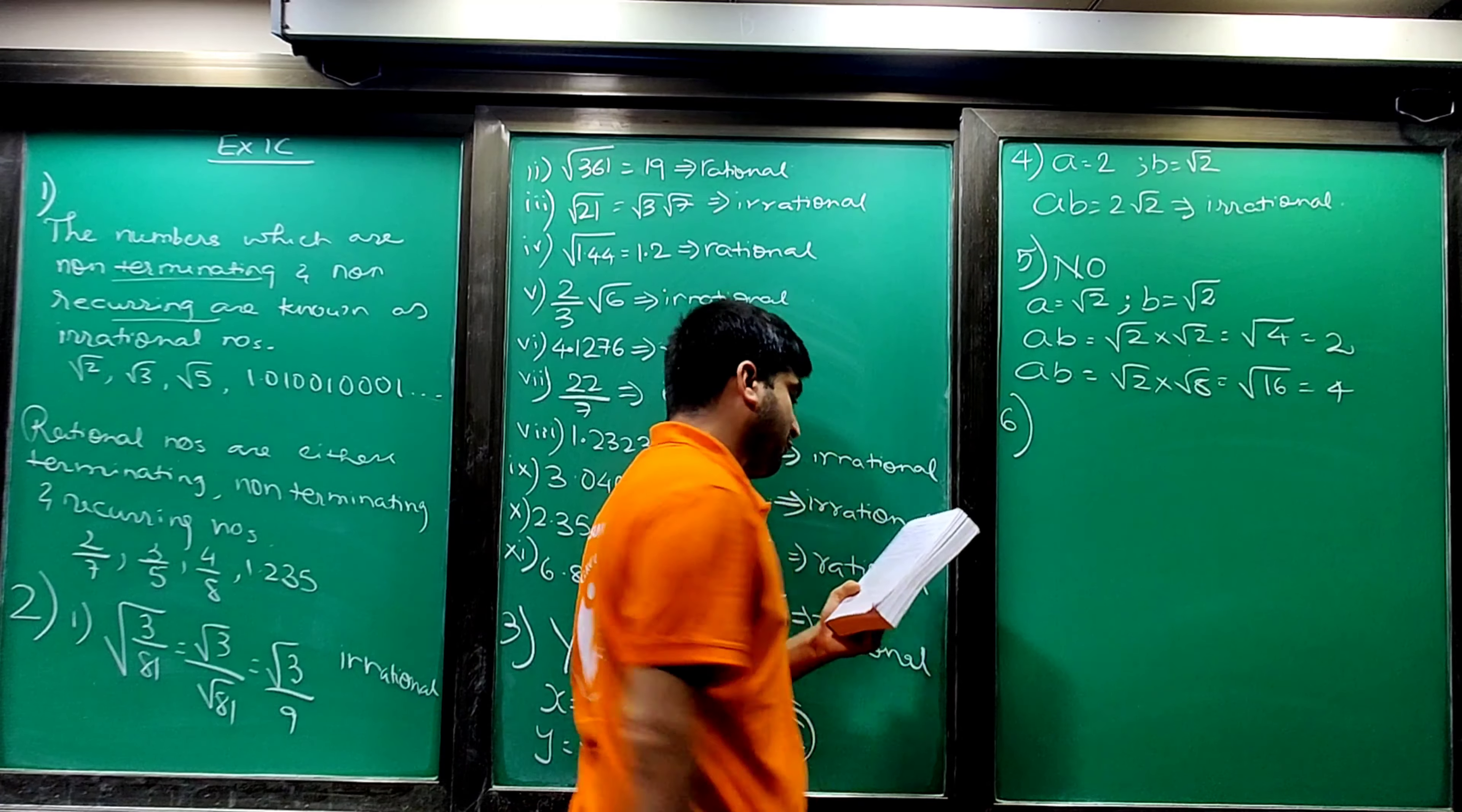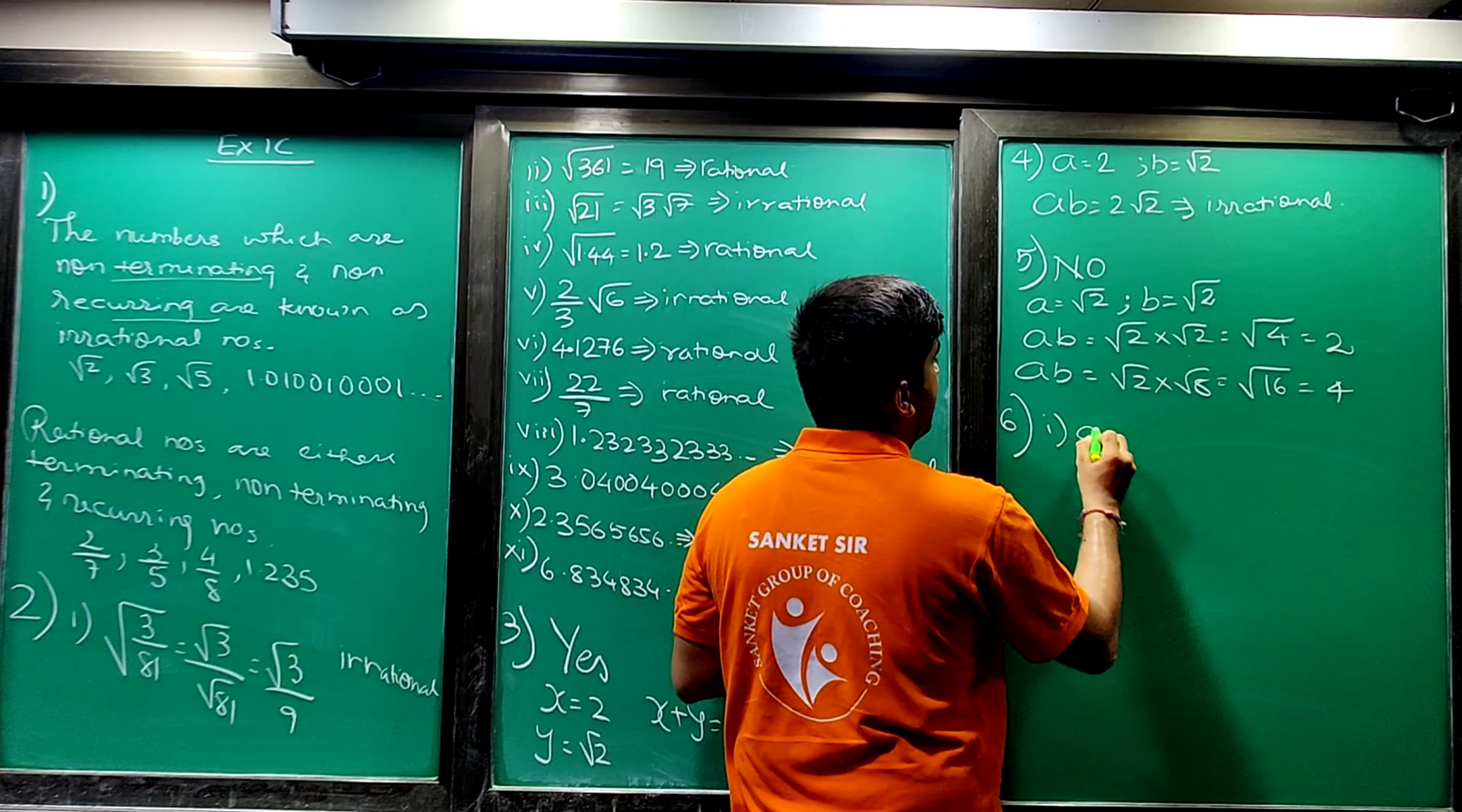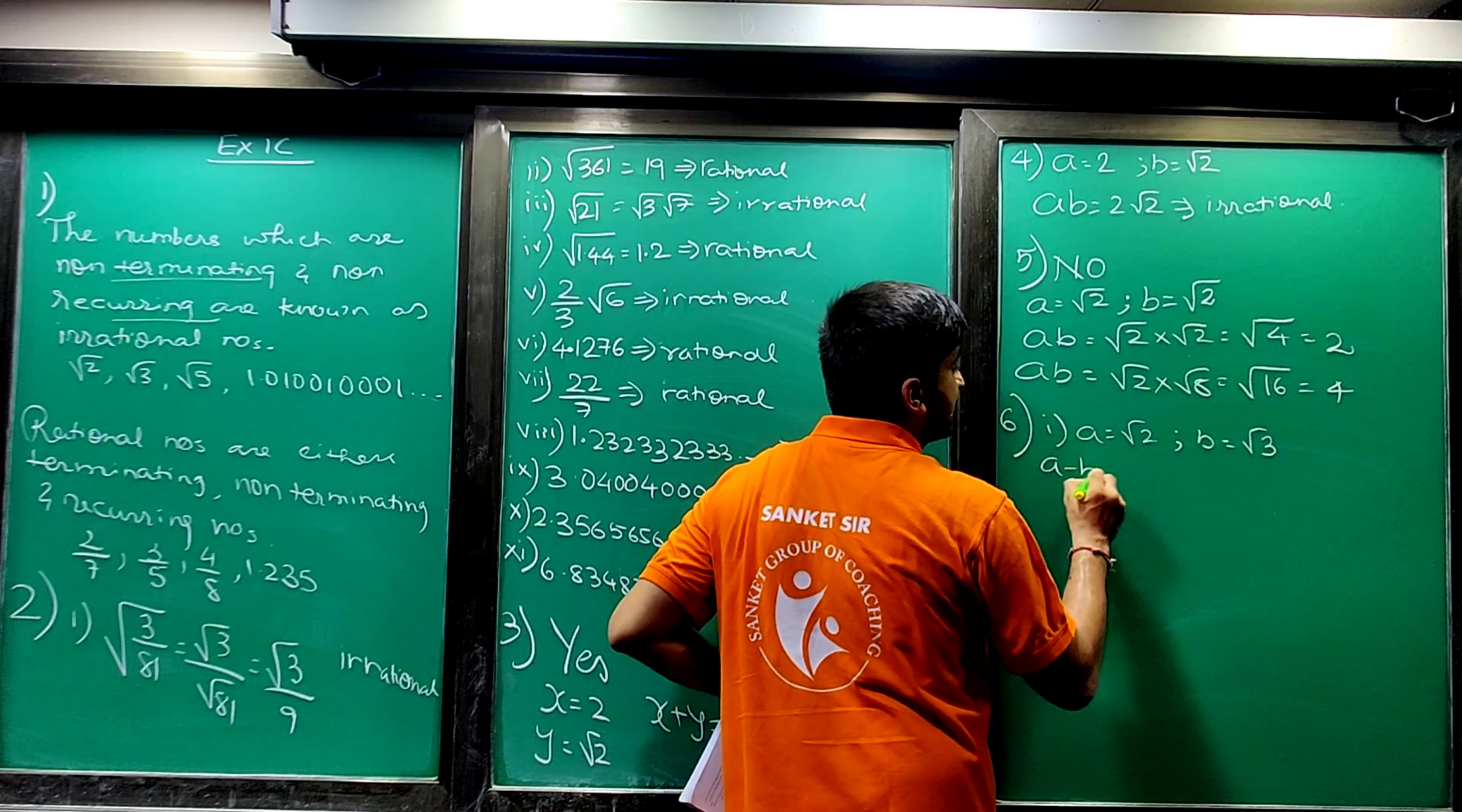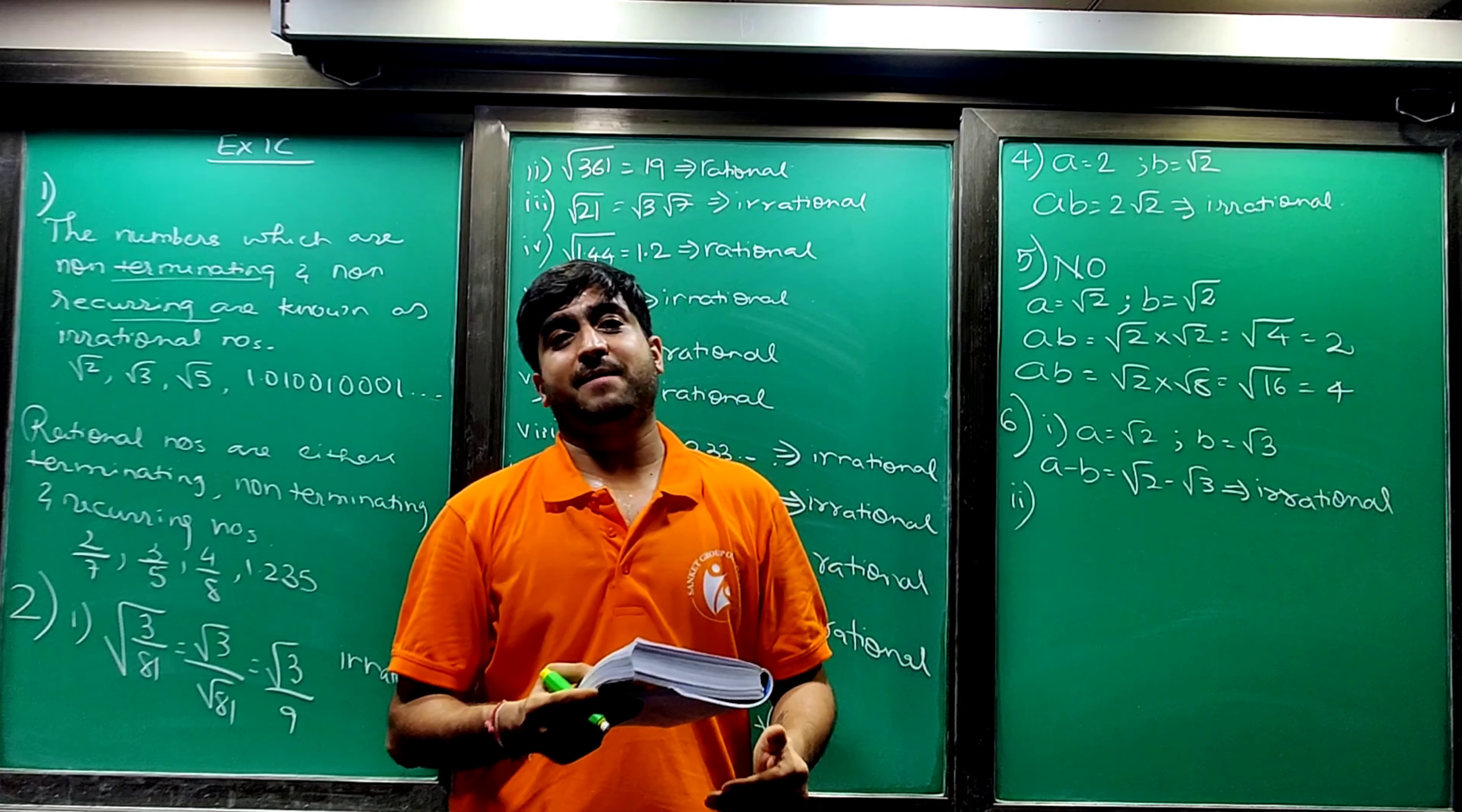Major sum number 6, very important: give an example of two irrational numbers whose first difference is irrational number. Let a equals to root 2 and b equals to root 3. The difference should be irrational number. Difference means a minus b: root 2 minus root 3, always an irrational number.